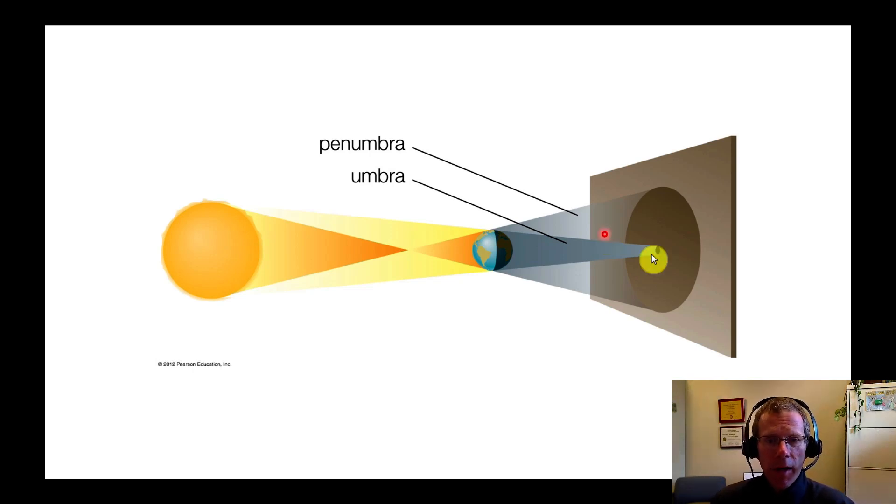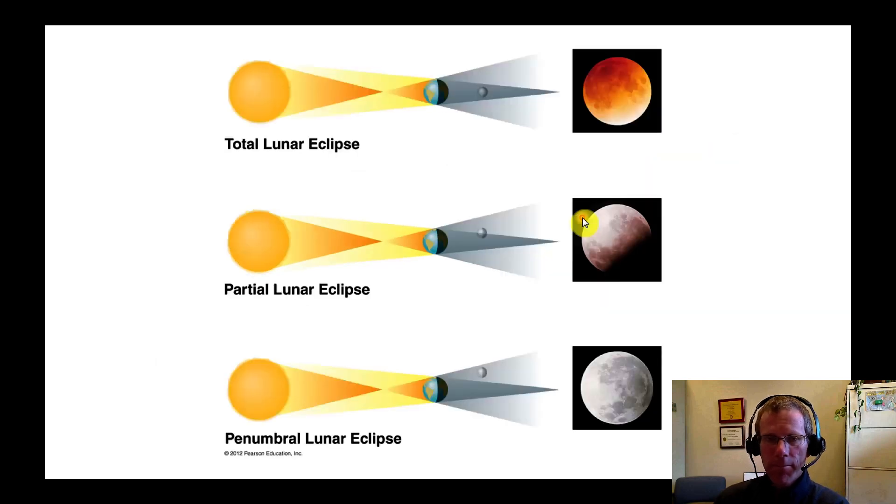This is showing a lunar eclipse, but it's also labeling the shadow. The darkest shadow is called the umbra. The partial shadow is called the penumbra. Here are the three possible lunar eclipses. When the moon is in the total, the darkest shadow, that's a total lunar eclipse. When it's partially in that dark shadow, that is a partial lunar eclipse. And when the moon is in the partial shadow, that's called a penumbral lunar eclipse because it's in the penumbra or partial shadow. And if that happens, you rarely notice anything.